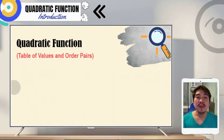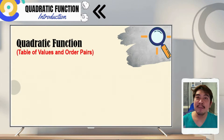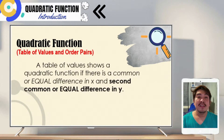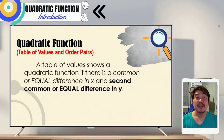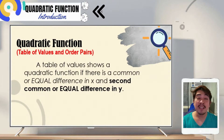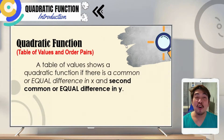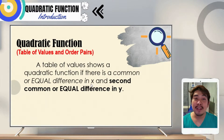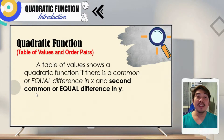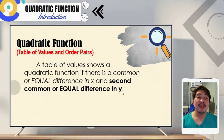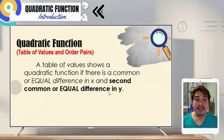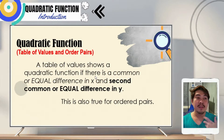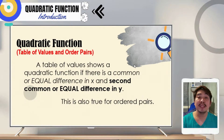Now, how do we determine if a given table of values or ordered pairs represents a quadratic function? A table of values shows a quadratic function if there is a common or equal difference in the independent variable x, and a second common or equal difference in y. This is also true for ordered pairs. Let us have an example.